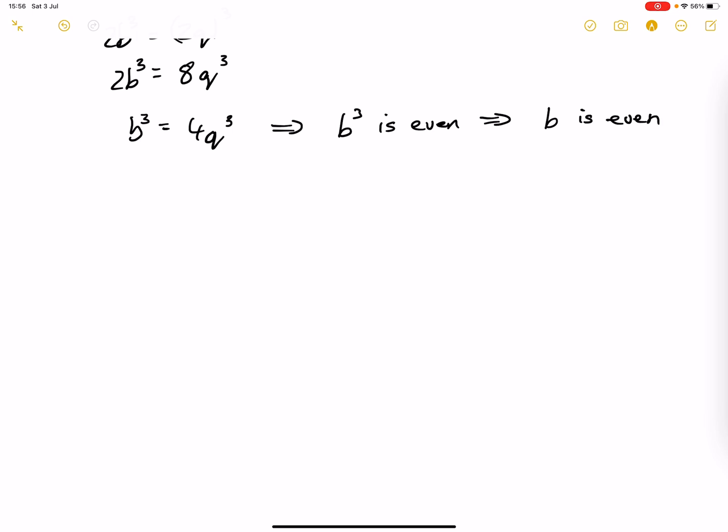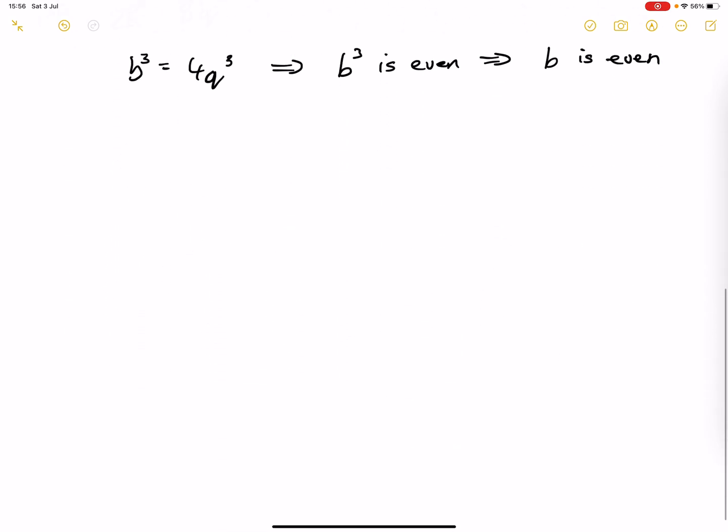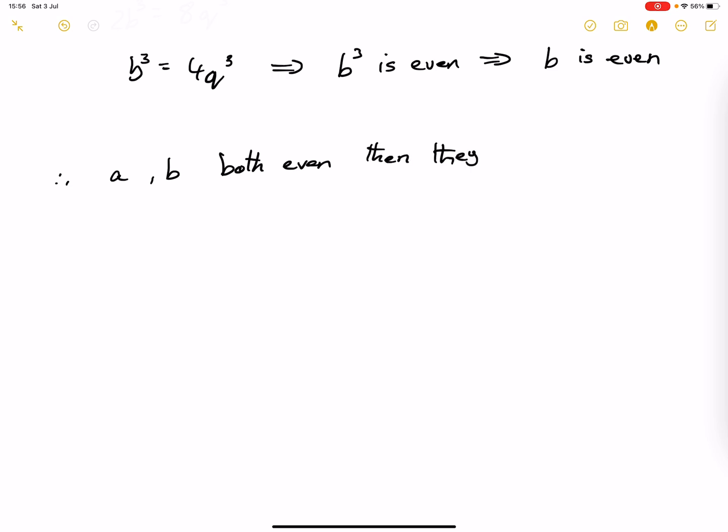But if A and B are both even, that means they share a common factor of 2. So I'll write this as a conclusionary statement: If A and B are both even, then they must share a common factor of 2.